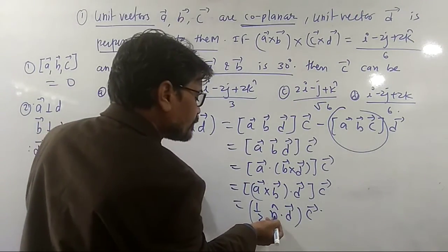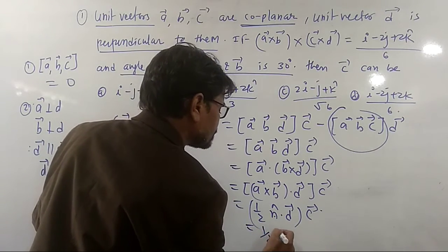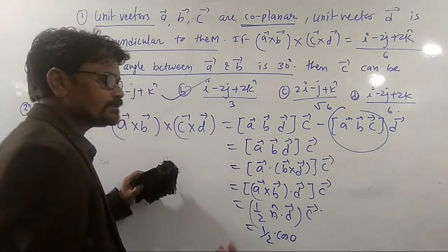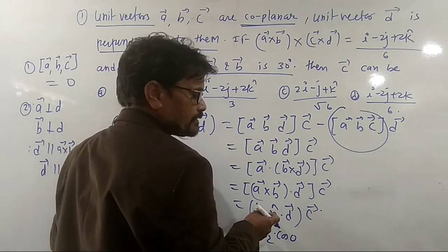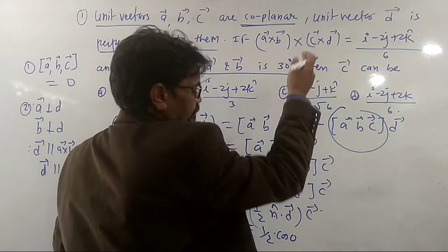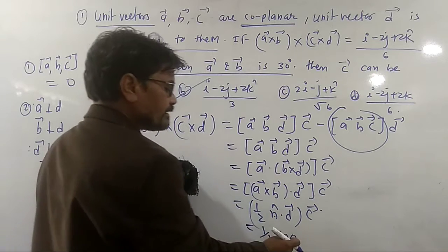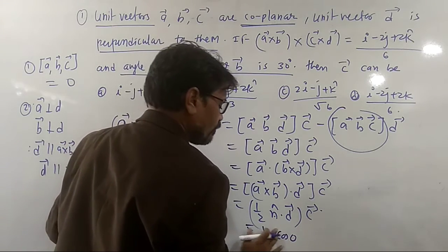Therefore dot product is given by half into simply cos of 0. Cos of 0 means 1. Magnitude of N is 1. Magnitude of D is 1 because both are unit vectors. And angle between them is 0. So cos 0 is 1.